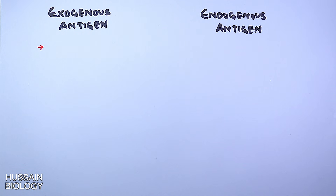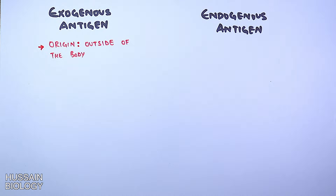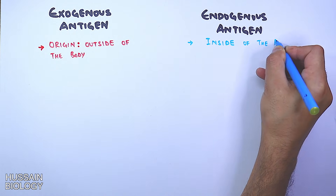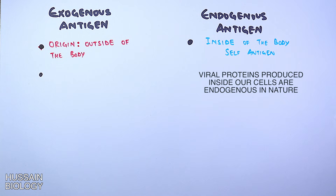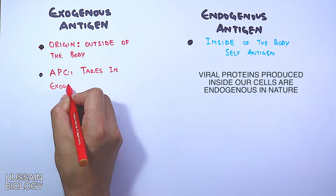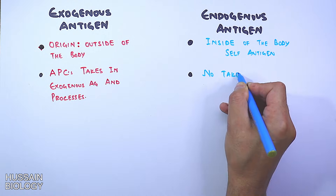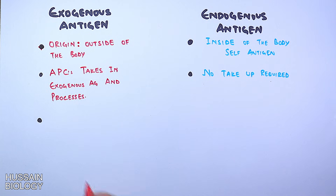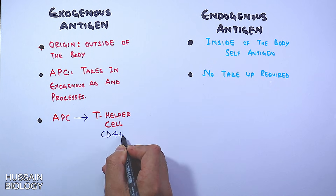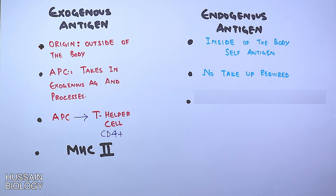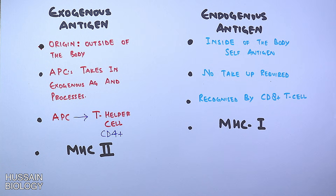Exogenous antigens have their origin outside of the body, whereas endogenous antigens originate inside the body — either as self antigens or antigens from bacteria or viruses. Antigen presenting cells take in and process exogenous antigens, whereas no uptake is required for endogenous antigens. In the exogenous pathway, APCs present the antigen to CD4 cells or helper T cells via MHC2 processing. In the endogenous pathway, antigens are degraded in the cytosol, then associated with MHC1 molecules of nucleated cells, which then present the antigen to cytotoxic T cells or CD8 cells.